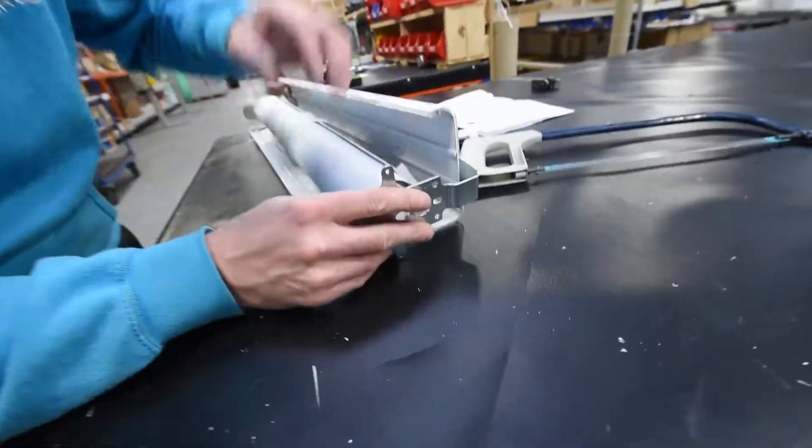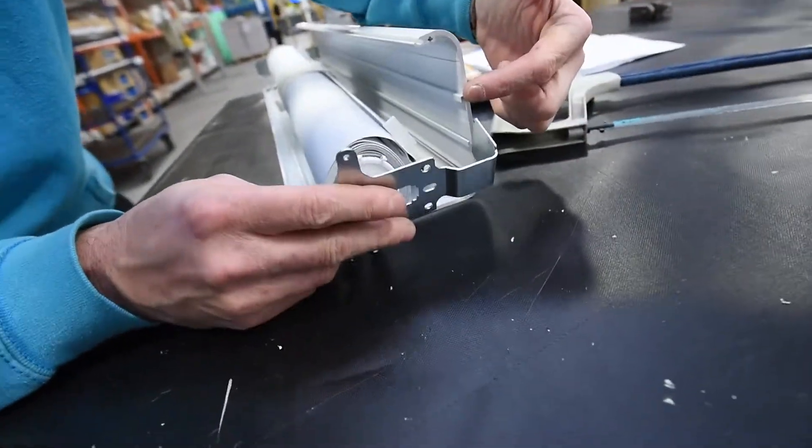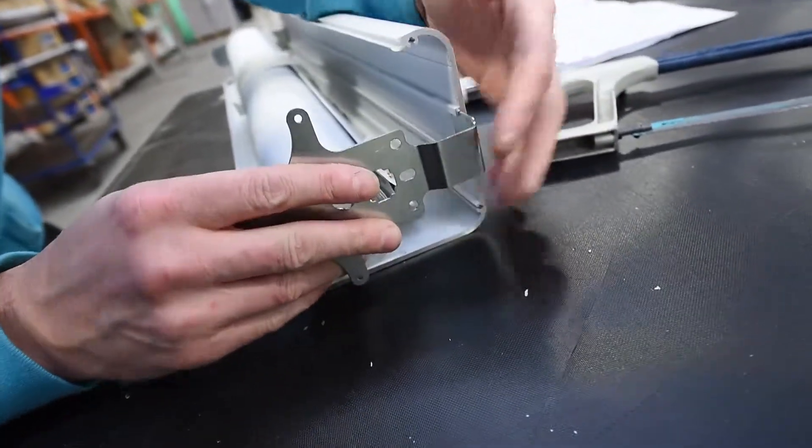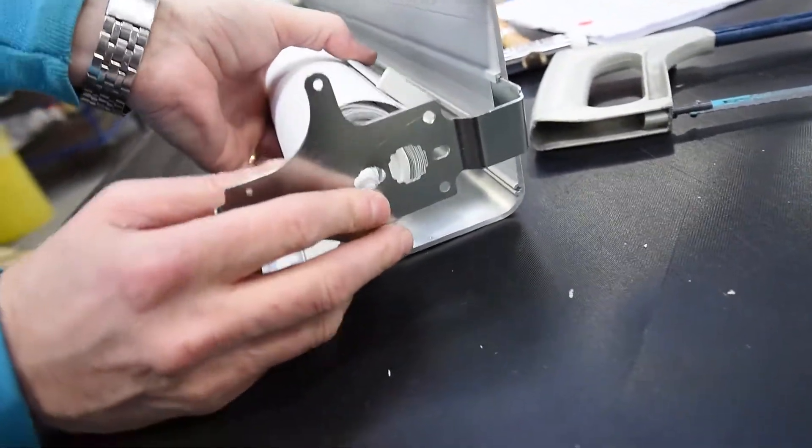On this side then, put the bracket on, and then we're going to do the opposite side. This bit into the two slots, lift up the bracket.